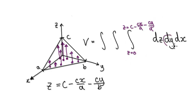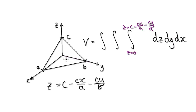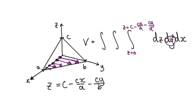So now we look at dy. In terms of dy, you're going to move parallel to the y axis. You start at y equals zero and then you stop at that diagonal line. So you're moving along parallel to the y axis, from y equals zero up to the line.